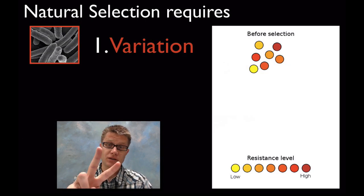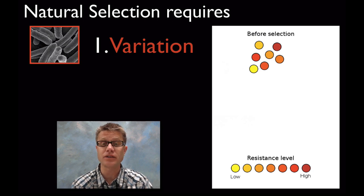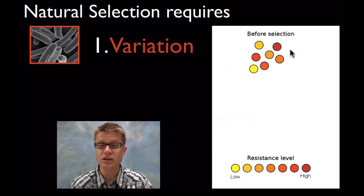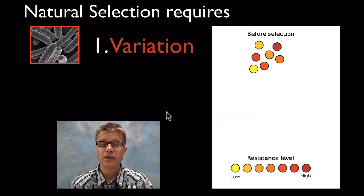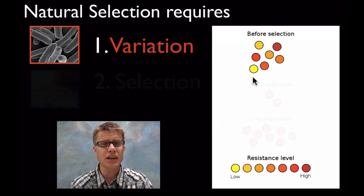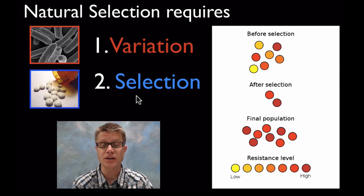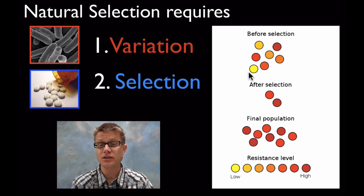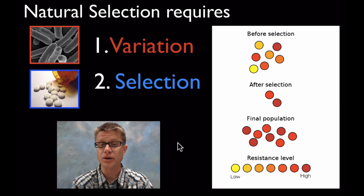Natural selection requires two things. First, it requires variation in the population to begin with — there have to be differences. A great example we can observe over years is natural selection in bacteria. Imagine bacteria showing different levels of resistance to antibiotics like penicillin — some with high resistance, some with low. Those are genetic differences manifested in how well they respond to an antibiotic. The second requirement is a selection process — something that targets those different trait variations differently. If we apply an antibiotic to a population of bacteria, it kills all the ones with low resistance. After selection, only resistant bacteria survive, and as they reproduce, the population changes.